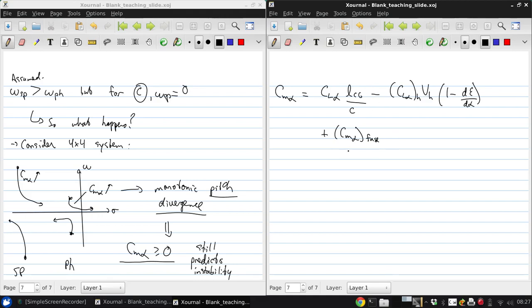Cmα fuselage is 2 times VFuse over SC, where VFuse is the fuselage volume. The factor 1 minus dε/dα is the effect of downwash from the main wing on the horizontal tail.